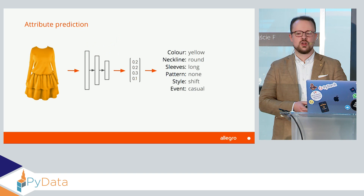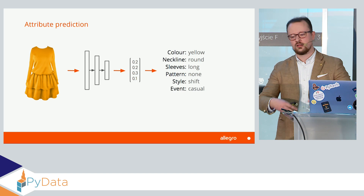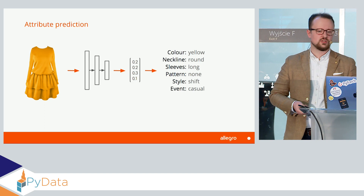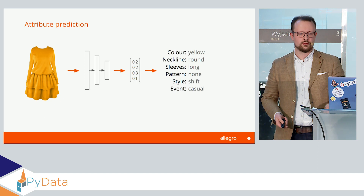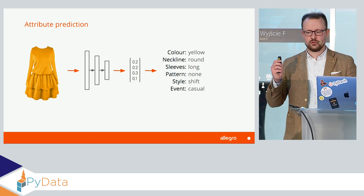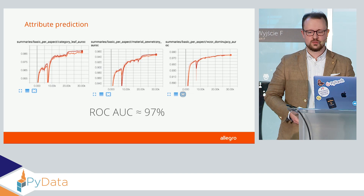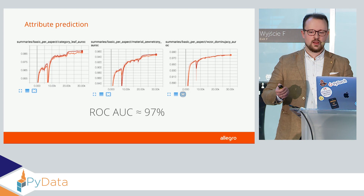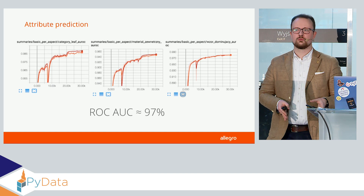So maybe let's try something different. We could try to predict the attributes. Instead of predicting dogs and cats and so on, we could train our network to predict what attributes a dress has. We have quite a lot of data — 700,000 offers just in the dresses category, and each offer is described with several attributes. Let's see if our model can learn those, and how that affects our training. We'll use AUC (area under the ROC curve) as our metric. As you can see from the graphs of the training progress, we quite quickly got to 97% — a really good result.